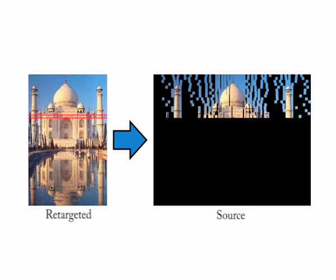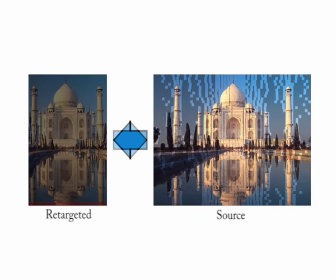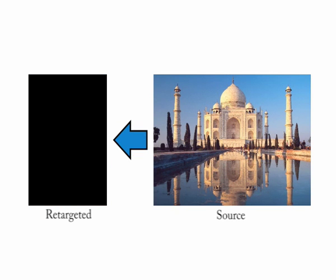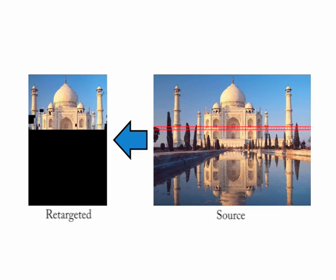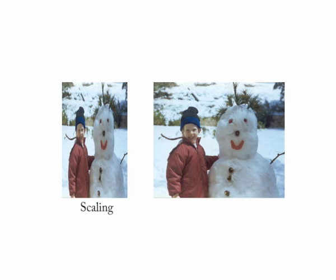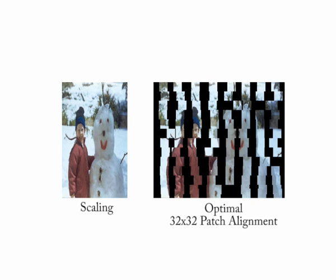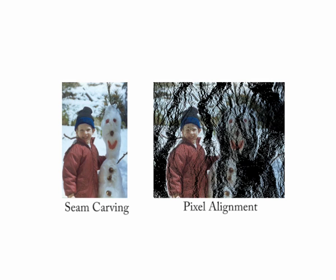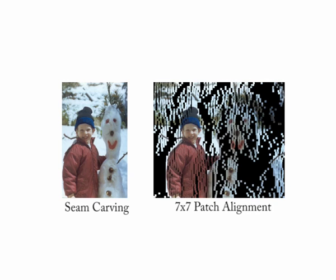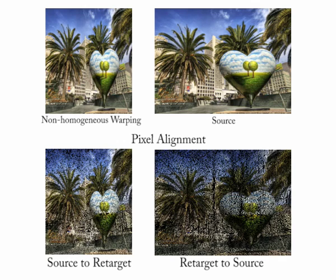We use a variation of the dynamic time-warping algorithm to efficiently calculate the optimal mapping for each row or column in the images. Our algorithm supports multiple patch scales to better capture spatial information on structural changes in the media. Further details on bidirectional warping can be found in the paper.